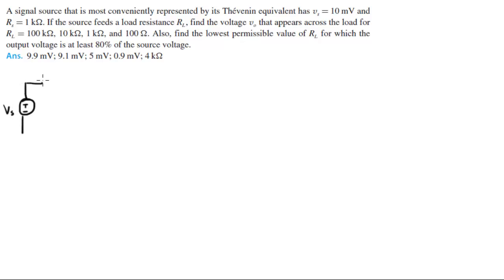So they tell you we got VS, we got a Thevenin equivalent, so we got VS, RS. If the source fits a load resistance RL, find the voltage VO. VO will be obviously here, that appears across a load for RL equals to all these different resistances, and then find the lowest permissible RL so that the output voltage is 80% of the source voltage.